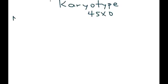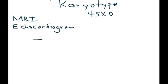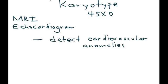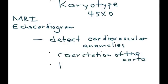An MRI or echocardiogram is used to detect cardiovascular anomalies such as the coarctation of the aorta previously mentioned. And in some patients, there is a condition in the heart known as bicuspid aortic valve.